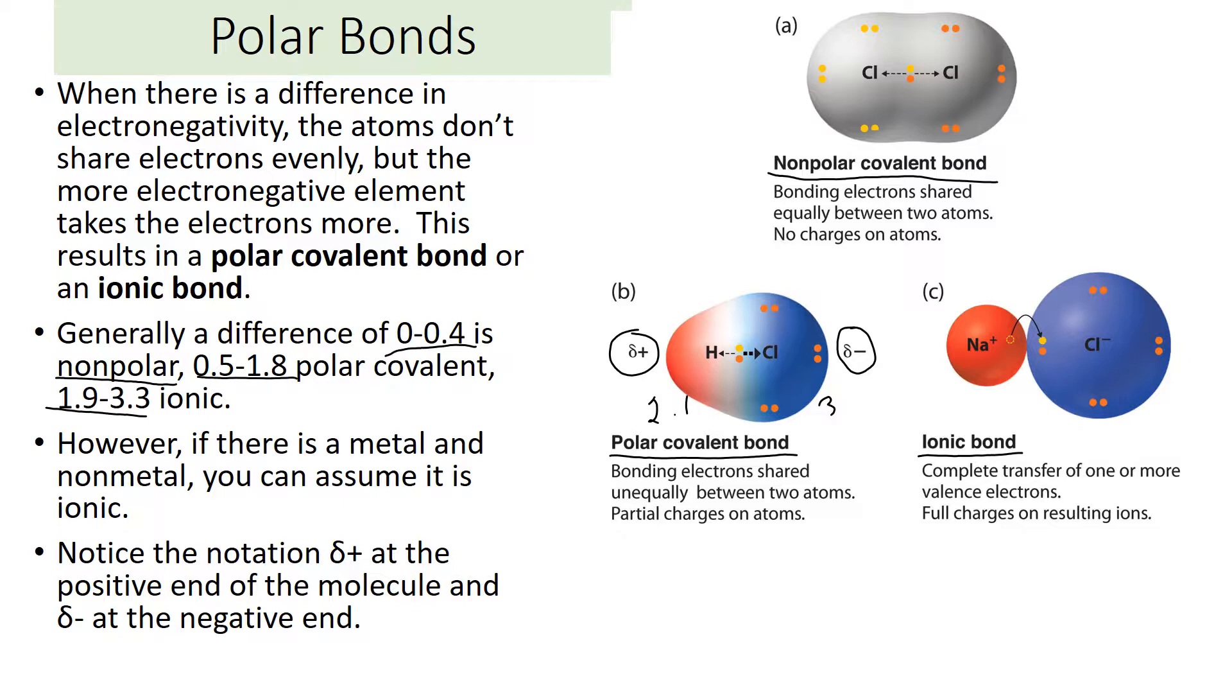However, I think it's easier to just think about ionic as a metal with a nonmetal. They're usually in that range, and that's something that you can remember based on the periodic table and you don't have to have exact electronegativity. So the way I think of it is if they're different, it's a polar covalent bond. If it's a metal and a nonmetal, it's an ionic bond. If they're the same element, it's nonpolar.